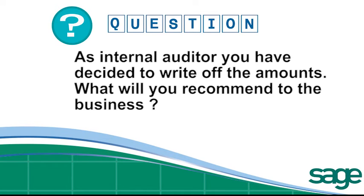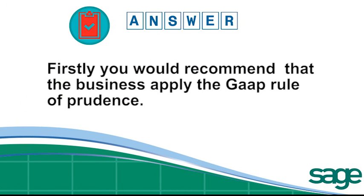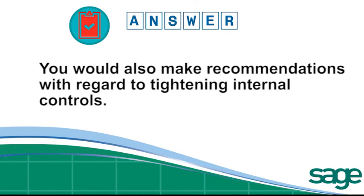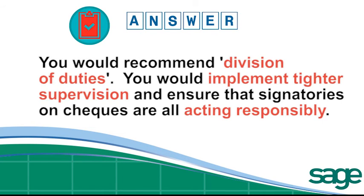What will you recommend to the business? Firstly, you would recommend applying the GAAP rule of prudence. The business must regard this transaction in a pessimistic light as there is no certainty that any amounts will be recovered. You would also make recommendations to tighten internal control. Since Will Crook was responsible for all vital activities relating to receipts, deposits and payments, you would recommend a division of duties, implement tighter supervision and ensure that signatories on checks are acting responsibly.